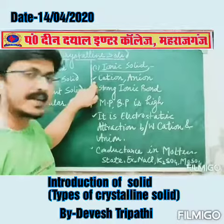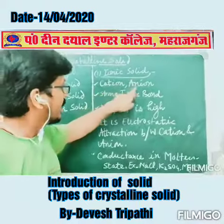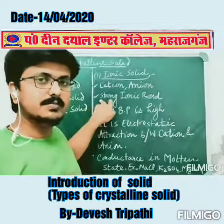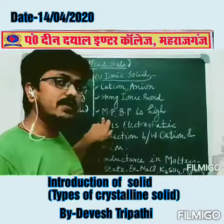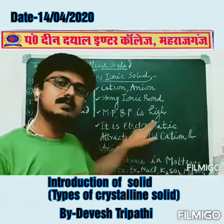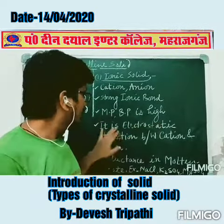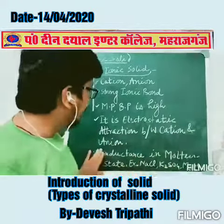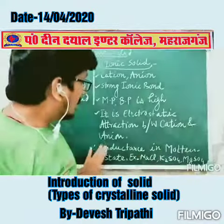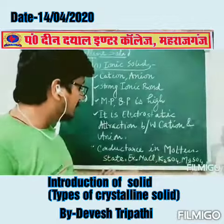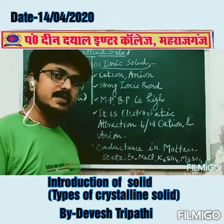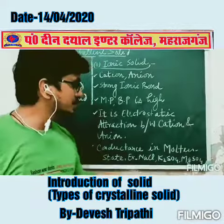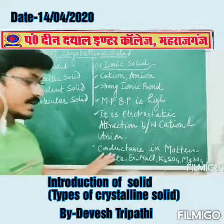In ionic solids, the constituent particles are cations and anions, with strong ionic bond formation. The melting point and boiling point is high due to electrostatic attraction between cations and anions. Conductance occurs in the molten state. Examples include NaCl, K₂SO₄, and MgSO₄.